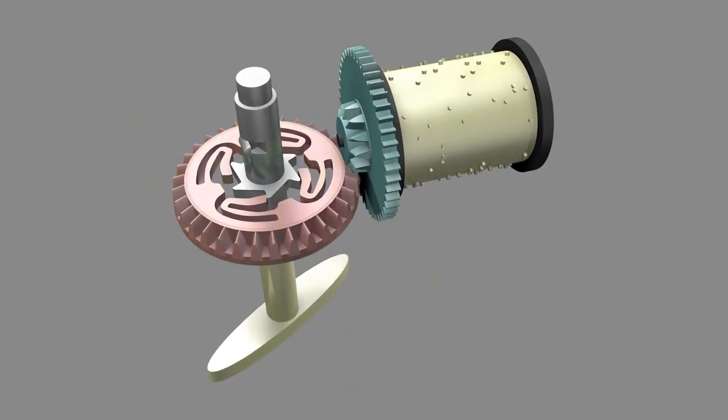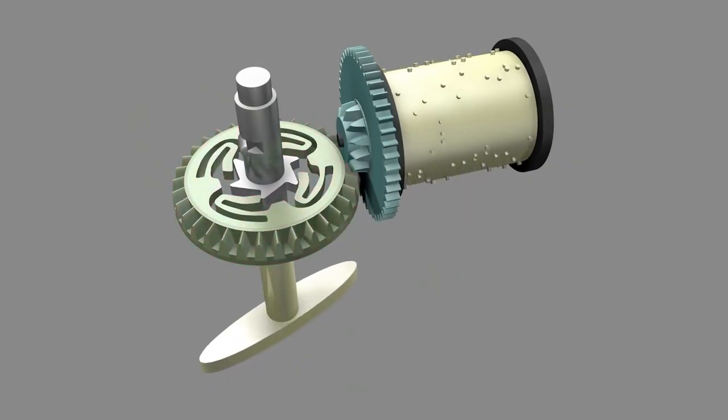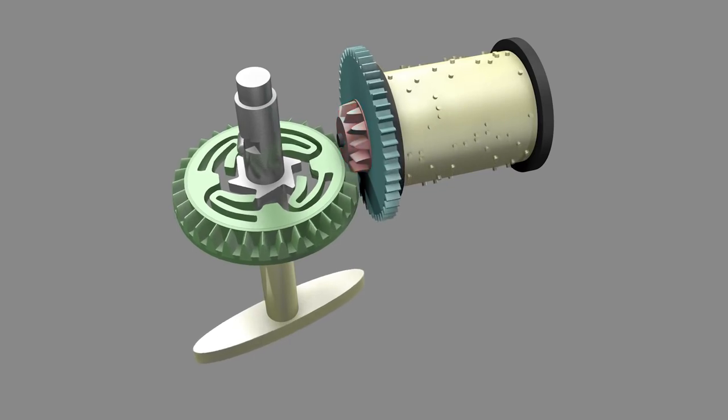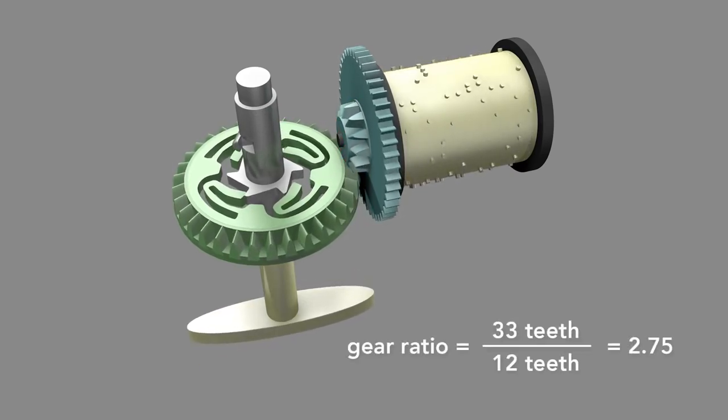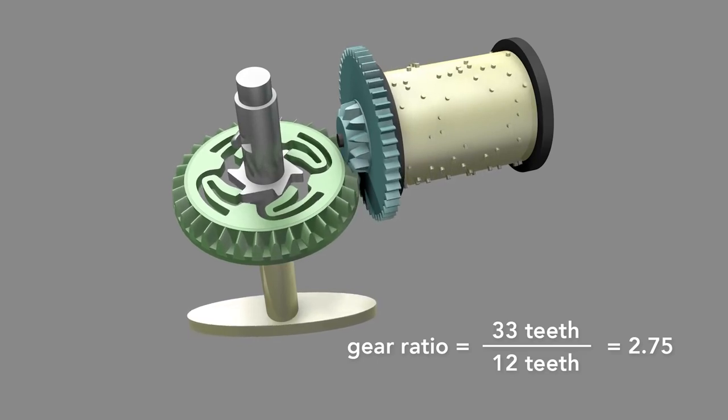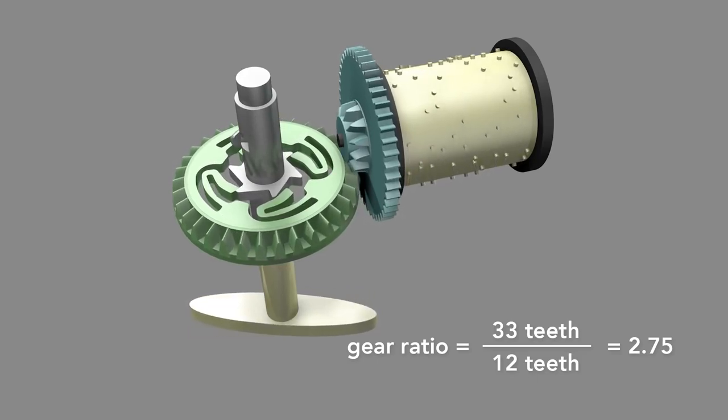To spin the governor so fast, the music box uses a multiplying gear train. It starts with the bevel gear driven by a spring, which engages a smaller gear on the drum. This multiplies the rotational rate by the ratio of the number of teeth on the larger gear to the number of teeth on the smaller gear, here 2.75 times.